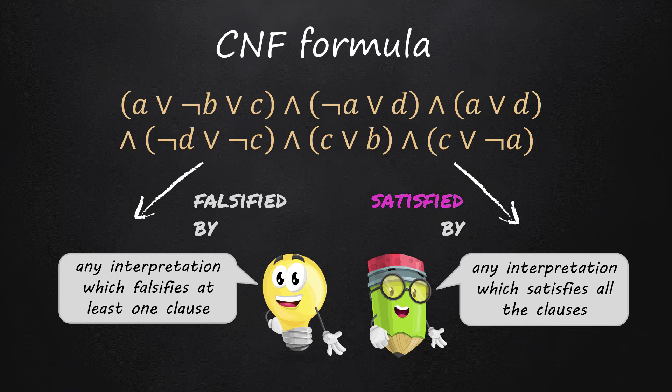A CNF formula is said to be satisfied by any interpretation that satisfies all its clauses. Such an interpretation is said to be a model of this formula. Any interpretation which falsifies at least one clause of a CNF formula is said to falsify this formula.